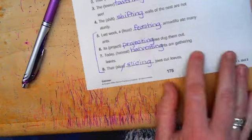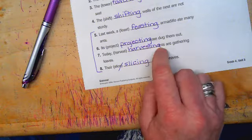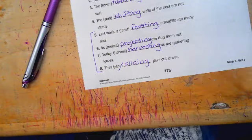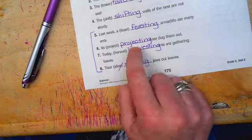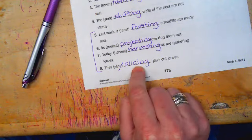All right. So hopefully you got feasting, projecting, harvesting, and slicing as your answers. And the only one we dropped the E on was slicing.